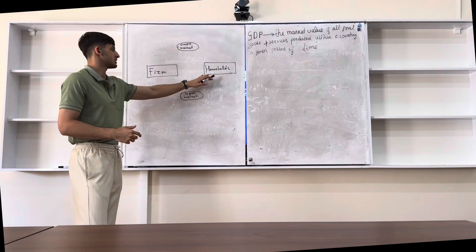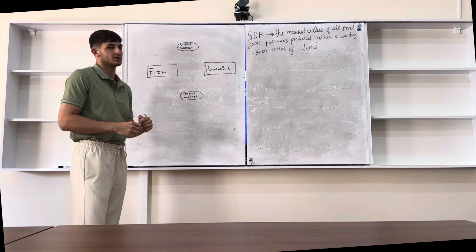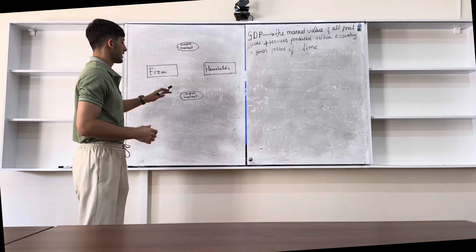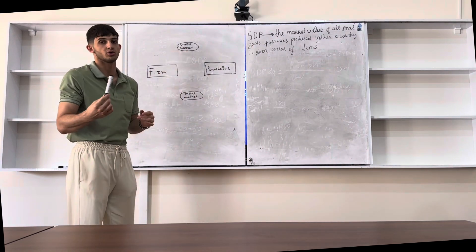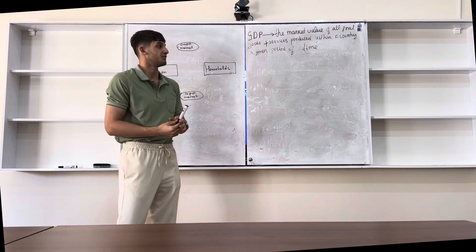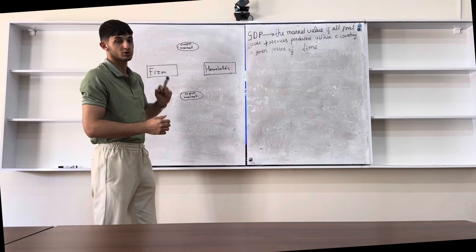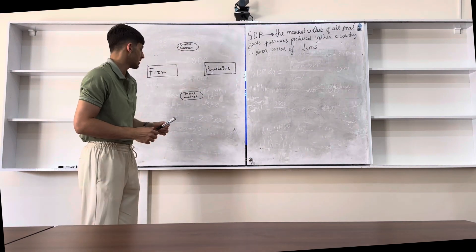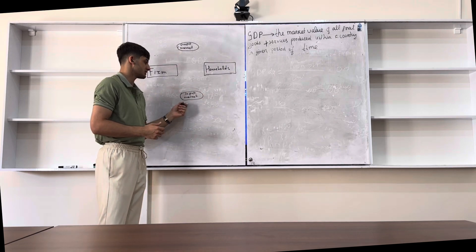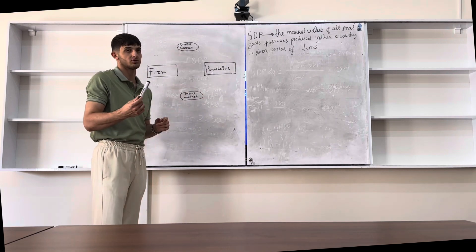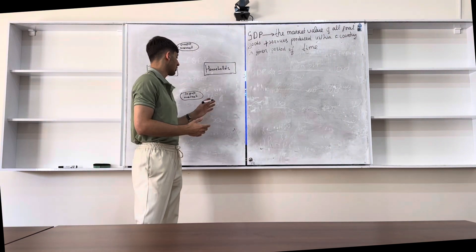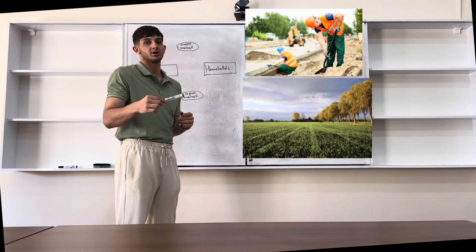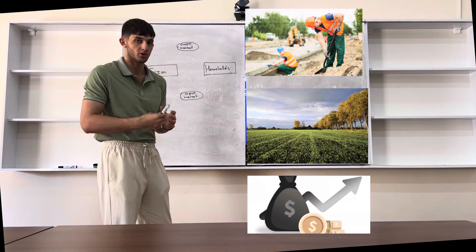As you can see, there are two boxes — firms and households. Up here we have the market for goods and services, which is called the output market, where goods and services are sold and bought. And down here we have the input market, which is the market for production factors like labor and capital, sold and bought.